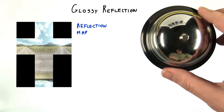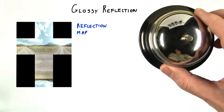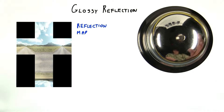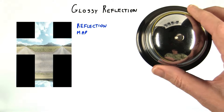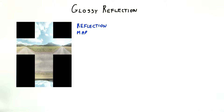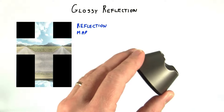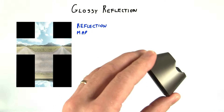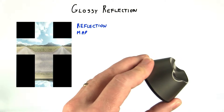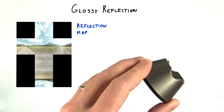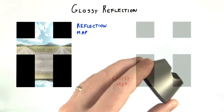With reflection mapping, we get sharp reflections. This is good as far as it goes, but many reflective surfaces are glossy. They're shiny, but they're not mirror-like. Reflections are a bit blurred.